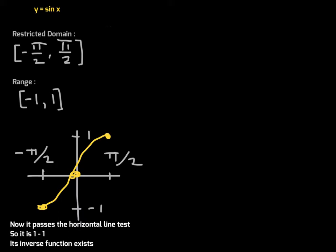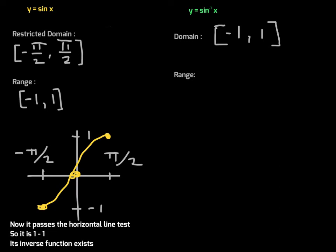Remember when studying inverse functions in algebra: the domain of this function becomes the range for the inverse, and the range of this function becomes the domain of its inverse. So the domain of inverse sine of x will be the same as the range for sine of x, and the range for inverse sine will be the same as the restricted domain for sine of x.